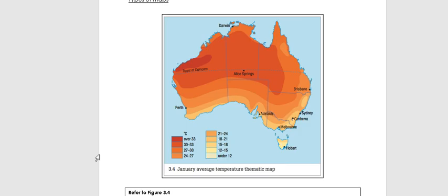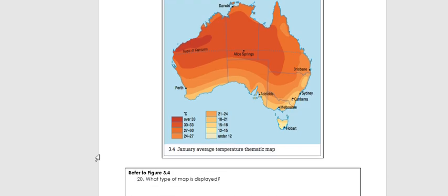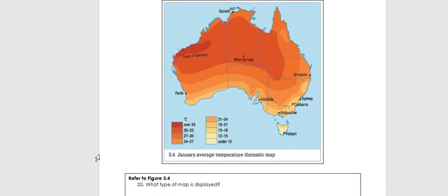That map is telling you the January average temperature in Australia — what the average temperature is during January. Your third question asks you to describe what information that map tells you. The sort of answer you'd be looking for is something like: most of central and northern Australia, including places like Alice Springs, experiences the highest January temperatures where the average can exceed 30 degrees — we get that from our scale, where the darker areas represent over 30 degrees.